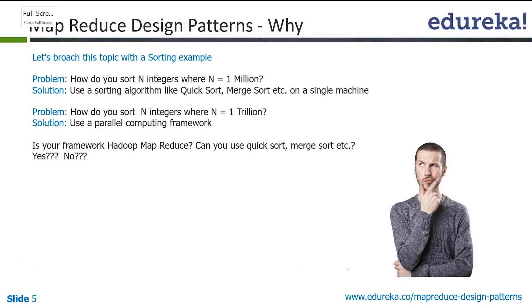Now we start with why you actually require design patterns. We want to broach this topic with a sorting example. I'm not going to give you code for the sorting example here, but just for the purpose of starting a discussion around why you require mapper design patterns. So if you have sorting on a single machine, you're doing a million-record sort, and of course quicksort and merge sort are the algorithms you'll definitely use.